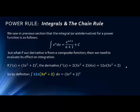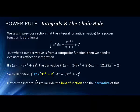By definition, since an integral is an antiderivative, the integral of our answer above — 12x times (3x² + 2) dx — is going to equal our original function: (3x² + 2) all raised to the power of 2. Notice that when we do the integral, the integrand has to include both the inner function and the derivative of the inner function in order to get back to the original function.